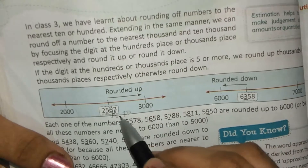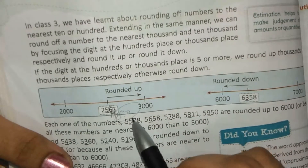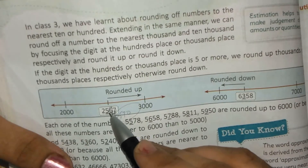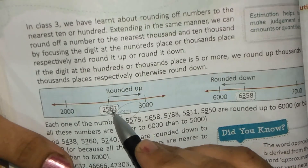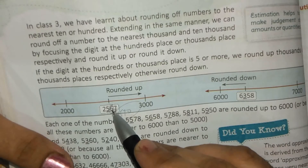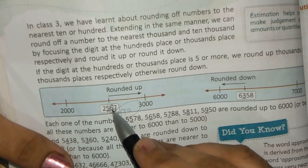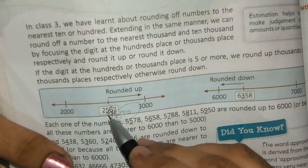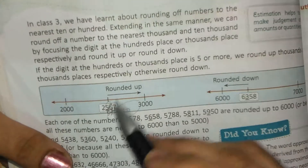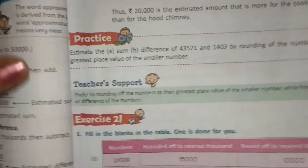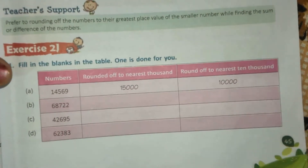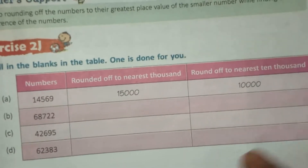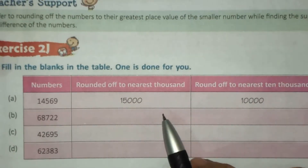This place is 6, add 1, that makes 7. And this place becomes 0. So if we look at it, we will have the nearest place — here we are talking about nearest thousand.